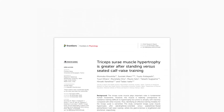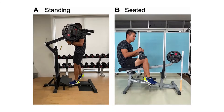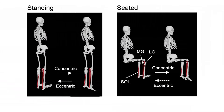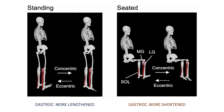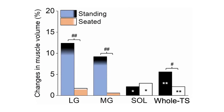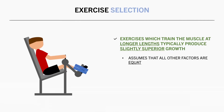This study compared the effects of performing standing versus seated calf raises. Standing calf raises train the gastrocnemius in a more stretched state due to the extended position of the knee, whereas seated calf raises train it in a more shortened state due to the flexed knee position. It was found that both heads of the gastrocnemius saw greater increases in muscle volume from the standing calf raises, whereas the soleus — whose length isn't influenced by knee position — saw similar growth between the two exercises.